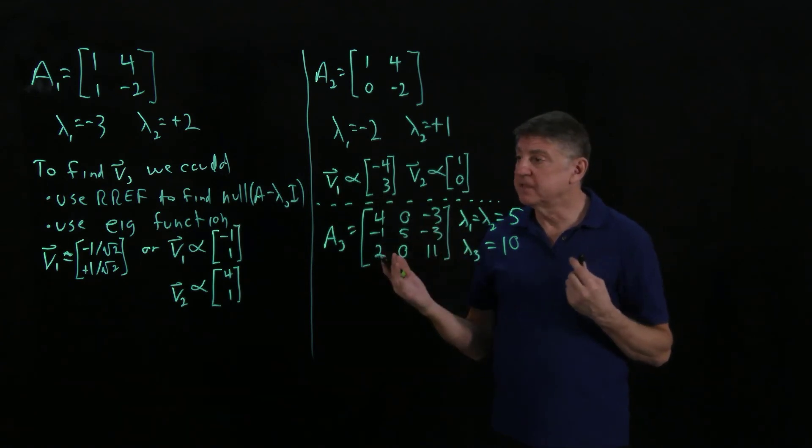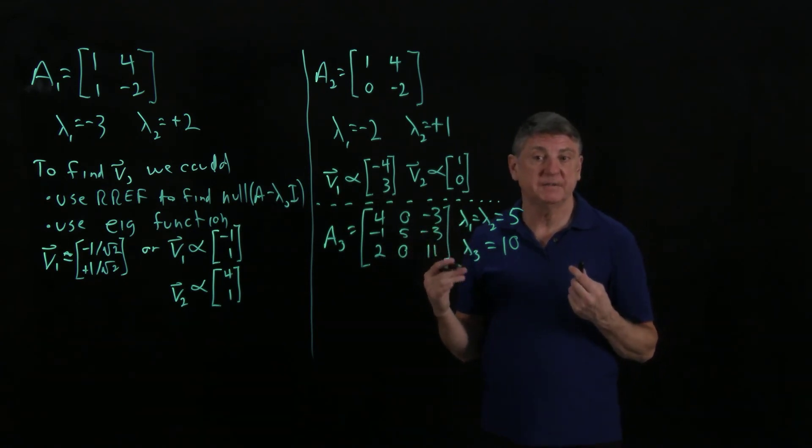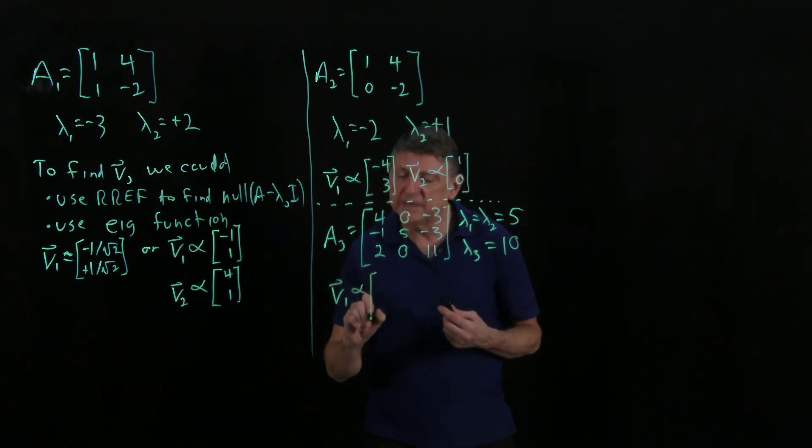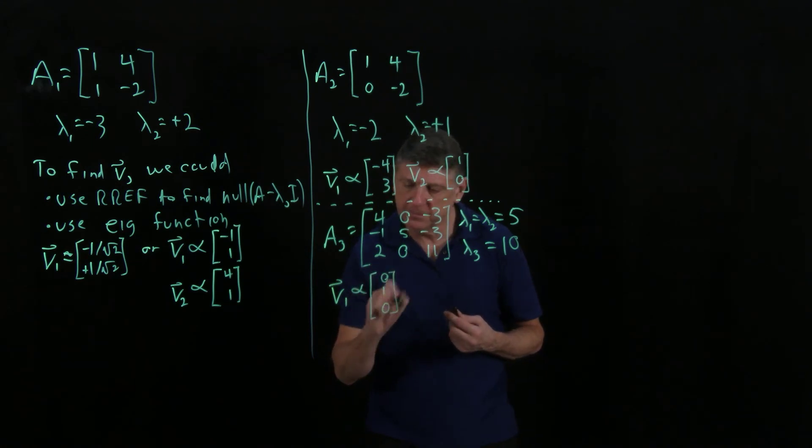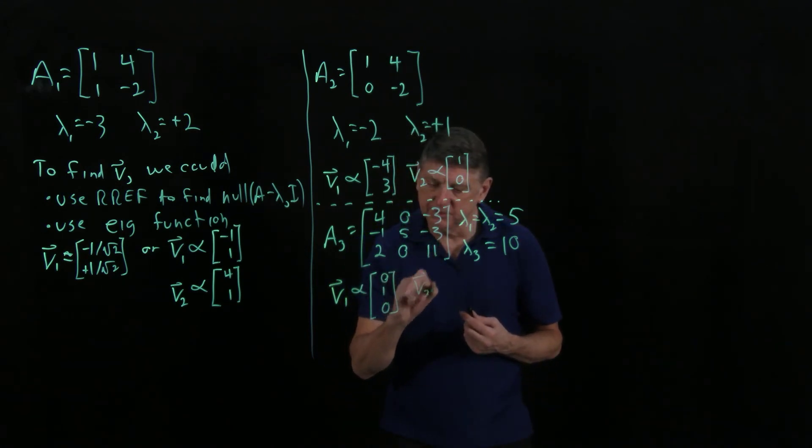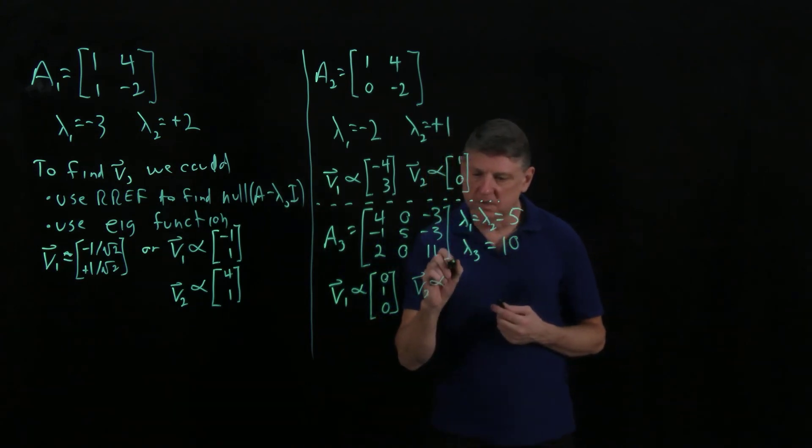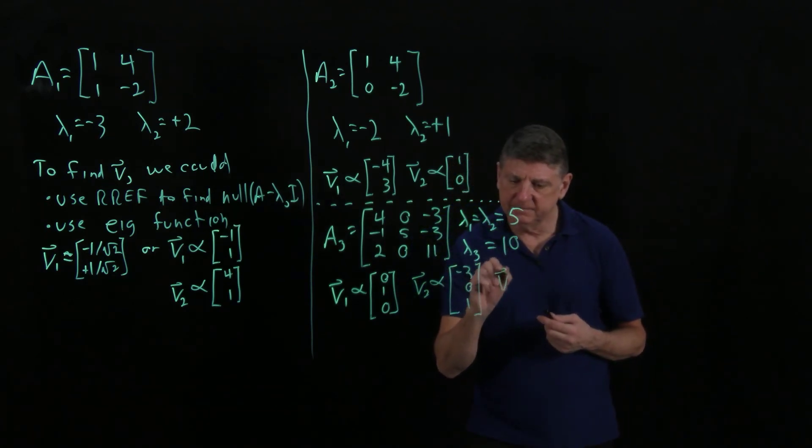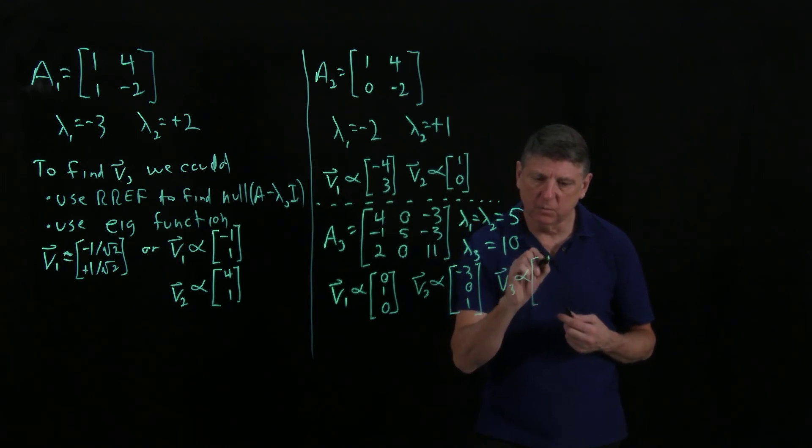this matrix does have an eigenvector basis. When I do the calculations, I find that v1 is any multiple of 0, 1, 0, that v2 is any multiple of minus 3, 0, 1, and that v3 is any multiple of 1, 1, minus 2.